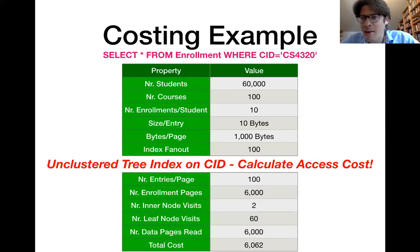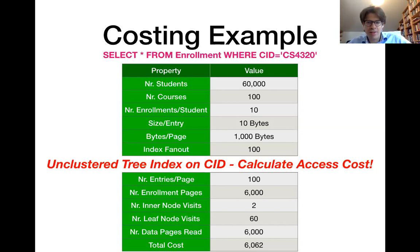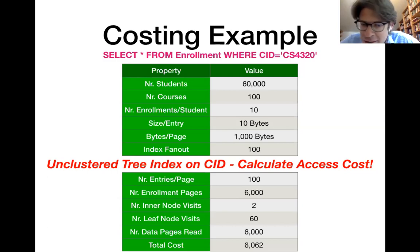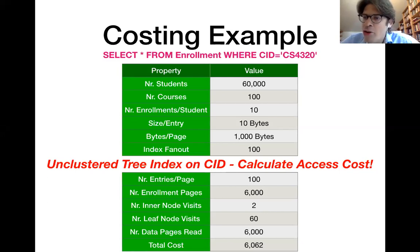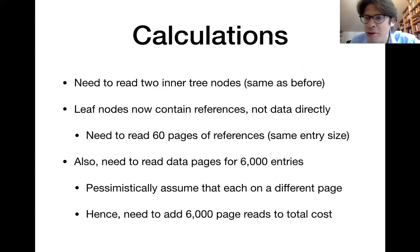Now let's assume we have an unclustered index instead, where leaf nodes point to the actual data rather than containing it. This adds overhead: we have the same number of inner nodes visited and leaf nodes read, but additionally we must access the actual data. Since we are looking for 6,000 entries located on different pages, we must read all 6,000 pages from hard disk, making access with that unclustered index quite expensive.